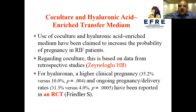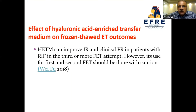The use of co-culture and hyaluronic acid in enriched transfer media has been claimed to increase pregnancy probability. Co-culture data is based on retrospective studies. For hyaluronic acid, higher clinical pregnancy, ongoing pregnancy, and delivery rates have been reported in one randomized controlled trial. It is recommended that it may improve implantation and clinical pregnancy rates in patients with RIF from the third or more frozen embryo transfer attempt, but its use for the first and second attempts should be done with caution.